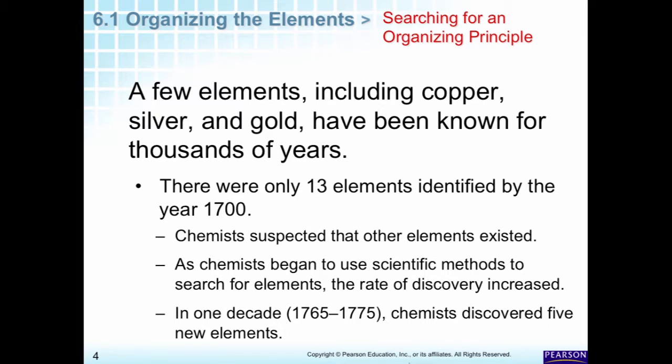It all started around 1700 when there were only about 13 elements. Some chemists thought there must be other elements among the ones we know, but this was the beginning of chemistry. We hadn't really started doing a lot of experimentation. There were people like the alchemists who were making things, but we really didn't start organizing the elements.